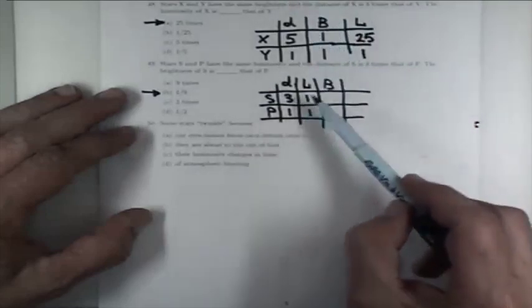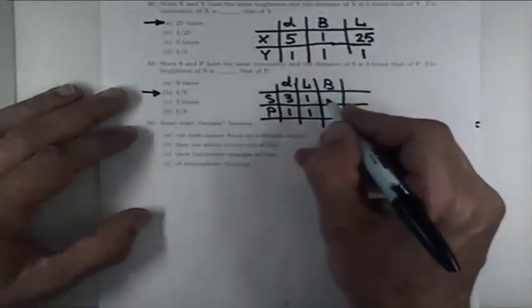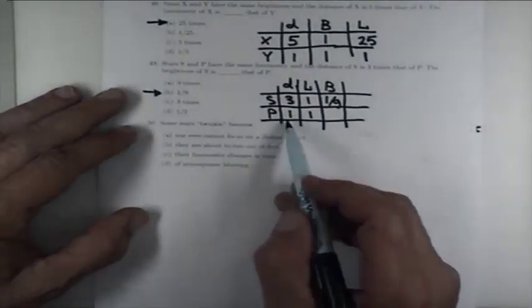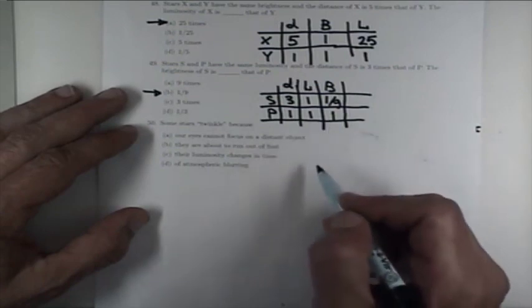In the first case, the brightness is going to be equal to one over three squared, which is nine, so it's one-ninth. For P, L is one, D is one, and the brightness is one.